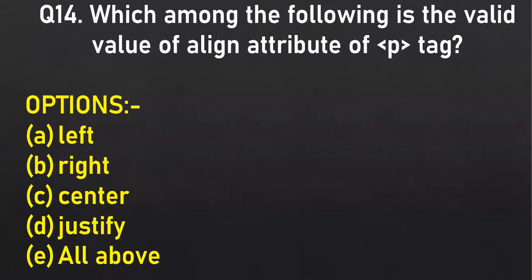Chayang's question: which among the following is a valid value of the align attribute of the p tag? The answer is E option — all of the above. Aditya confirms: E option, all of the above. If I say only A, B, and C — justify is also a valid value, and we tried this when discussing the image tag, where we justified the paragraph with respect to the image.